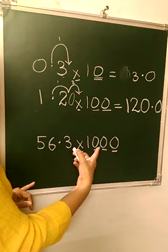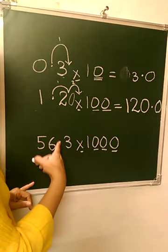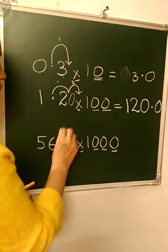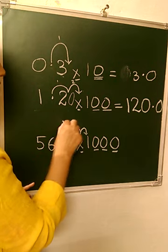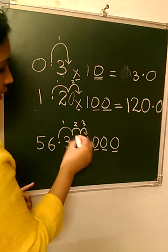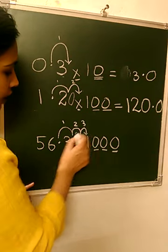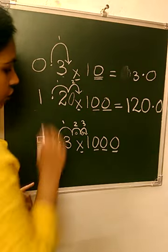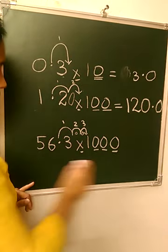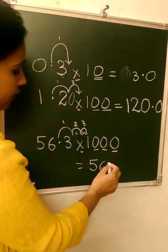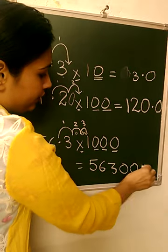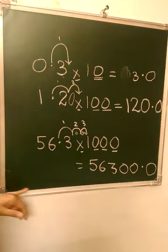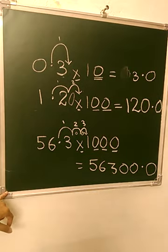Now here how many zeros? One, two, three. So decimal will shift three places. So one, two, three. That means we'll put one zero after three and one more zero after three. Got it? So your answer will become five six is already there, three is already there. Two more zeros we'll put, and we put a decimal and then zero. So this is how we get the answer.